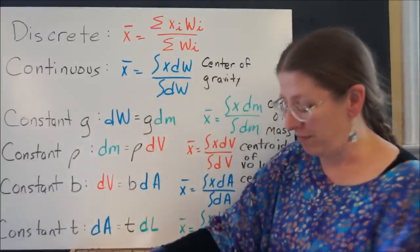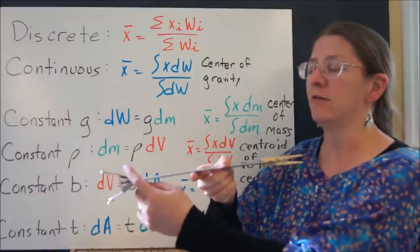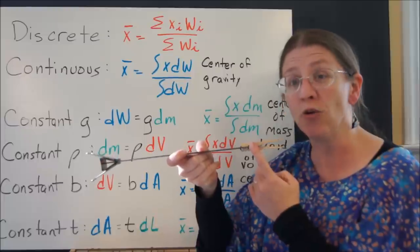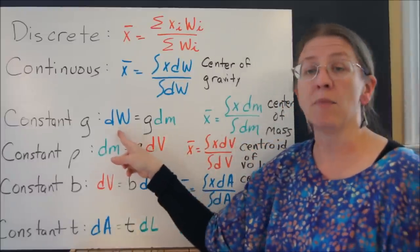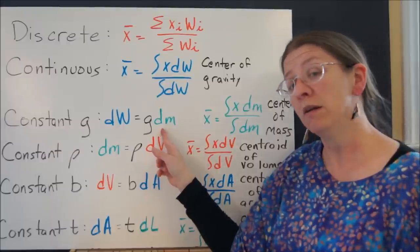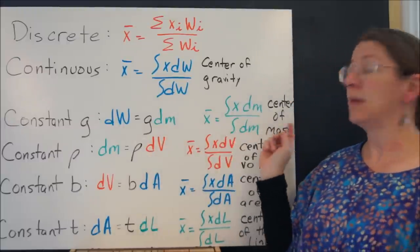If, on the other hand, the distance between one end of my object and the other end is not significantly big enough to change my gravity, then I could say that every little bit of weight is mass times gravity. That gives me my center of mass.